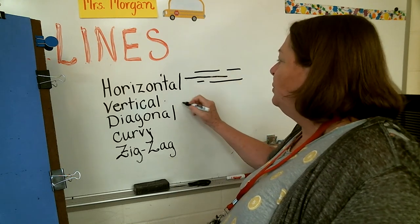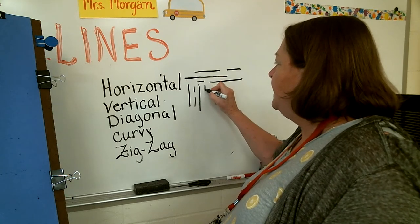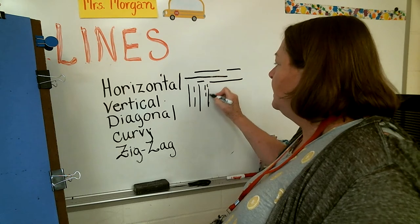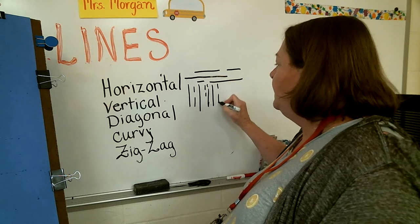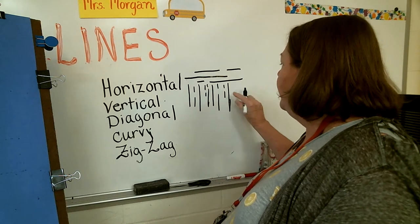The vertical line, those go straight up and down. Some are long, some are short. You can do dotted lines, but those go straight up and down.